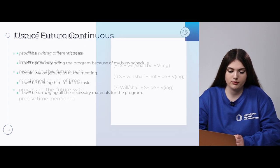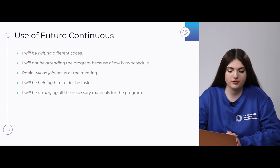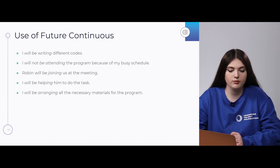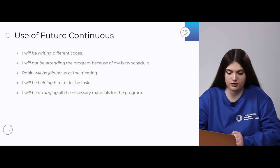Let's look at examples. There is mainly one case when we use it: 'I will be writing different quotes,' 'I will not be attending the program because of my busy schedule,' 'Robin will be joining us at the meeting,' 'I will be helping him to do the task,' or 'I will be arranging all the necessary materials for the program.' In these examples we see the process in the future with some time mentioned.